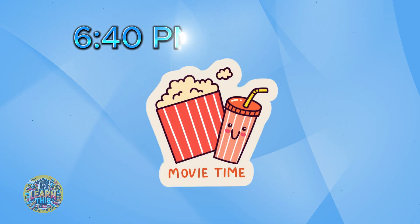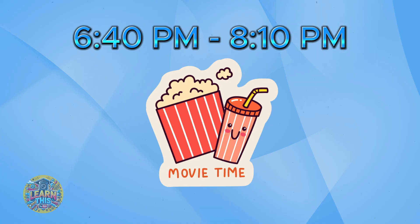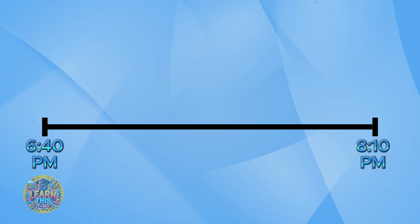Now let's try one with hours and minutes. Suppose you go to a movie and it starts at 6:40 p.m. and it ends at 8:10 p.m. How long is the movie? Draw a number line with 6:40 p.m. on the left and 8:10 p.m. on the right. Now the first thing you want to do is make this time easier to count by counting up to the next closest hour.